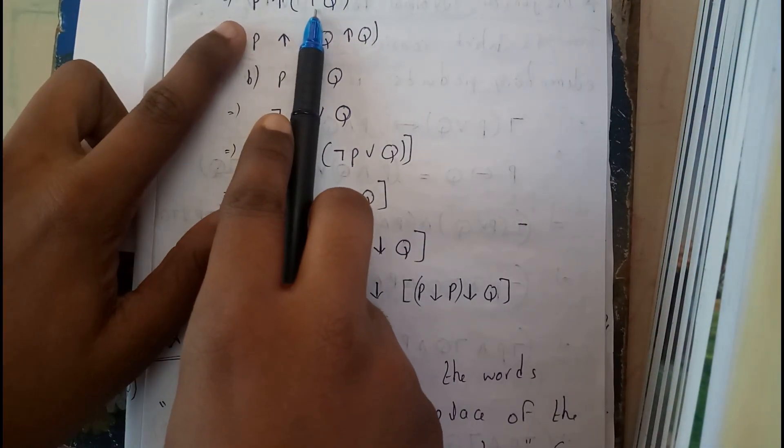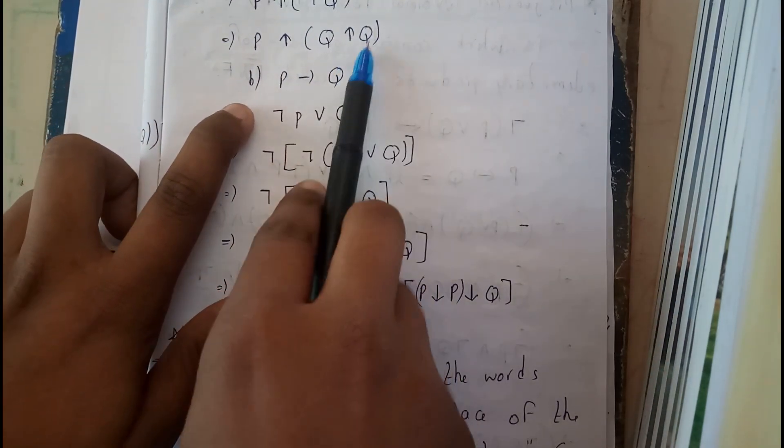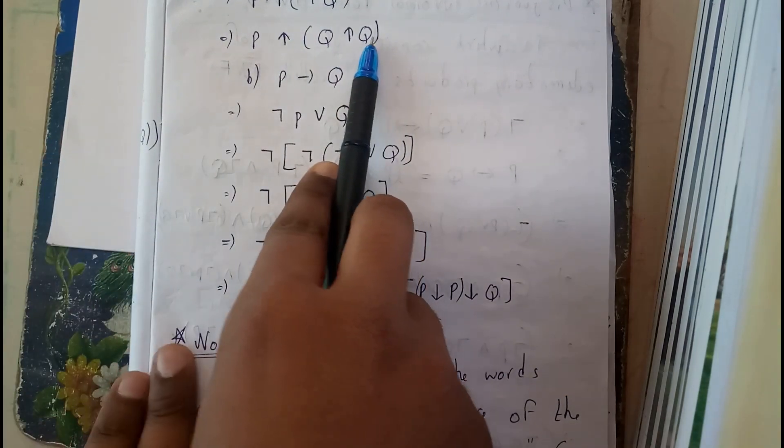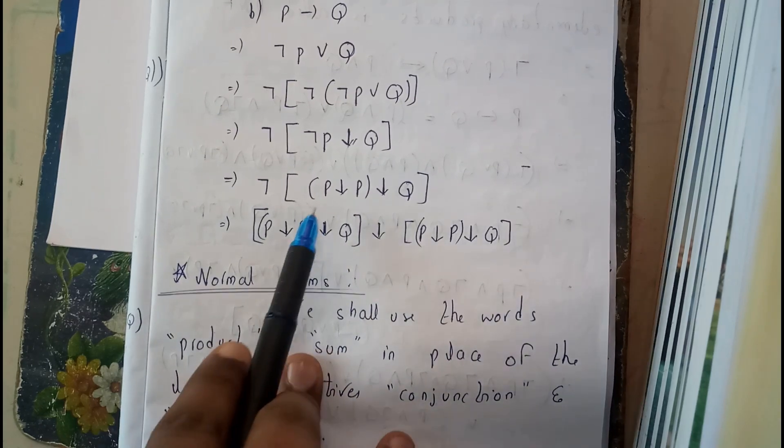You can stop even here or you can further continue it. Negation of Q can be written as Q upper arrow Q, Q NAND Q. Try to solve the next question. Here is the solution also, you can just check it out here.